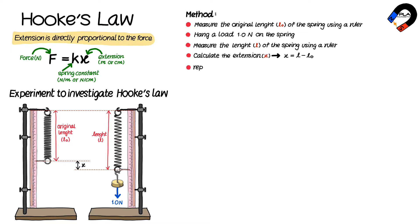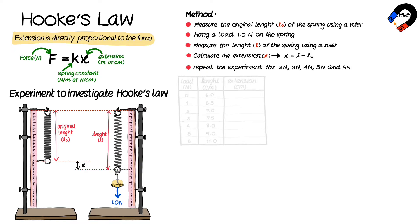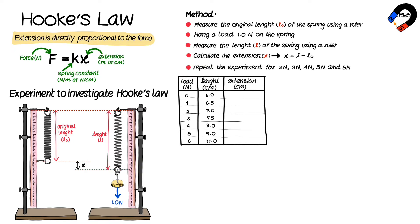Repeat the experiment for additional loads of 2 newtons, 3 newtons, 4 newtons, 5 newtons, and 6 newtons. Record the results of the length of the spring and its extension in the table.